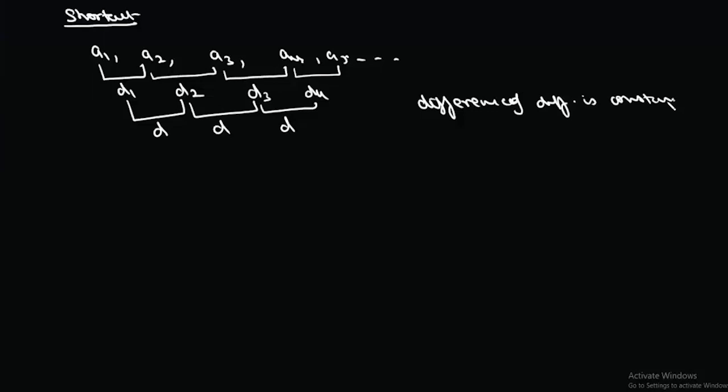In this case, we know that the nth term will be given by a quadratic expression: an² + bn + c. First we look at the standard way of solving the question, and then we look at the shortcut.